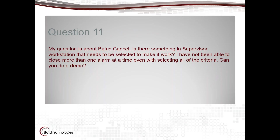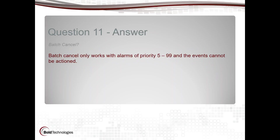Question eleven about batch cancel: is there something in the supervisor workstation that needs to be selected to make it work? Batch cancel will only work if the alarms are priorities 5 through 99. Anything priority 4, 3, 2, or 1 cannot be batch canceled. Also, it cannot be in action. Those on older versions where sending an email flags it as action will want to update to the latest so that works correctly.